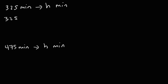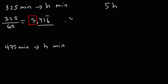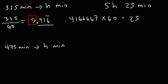Starting with 325, step one is to divide by 60, giving 5.416 repeating. We take the whole number 5 as our hours. The leftover part is 0.4166667 — multiply that by 60 and you get 25. So the answer is 5 hours and 25 minutes. To verify: 5 times 60 plus 25 equals 325.